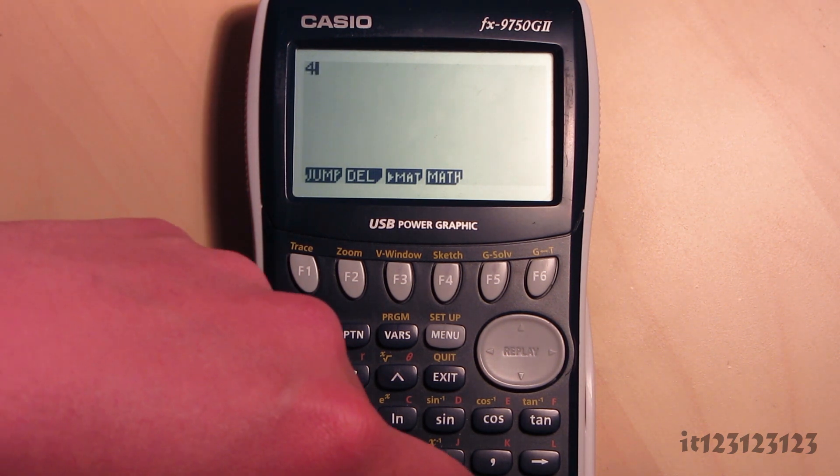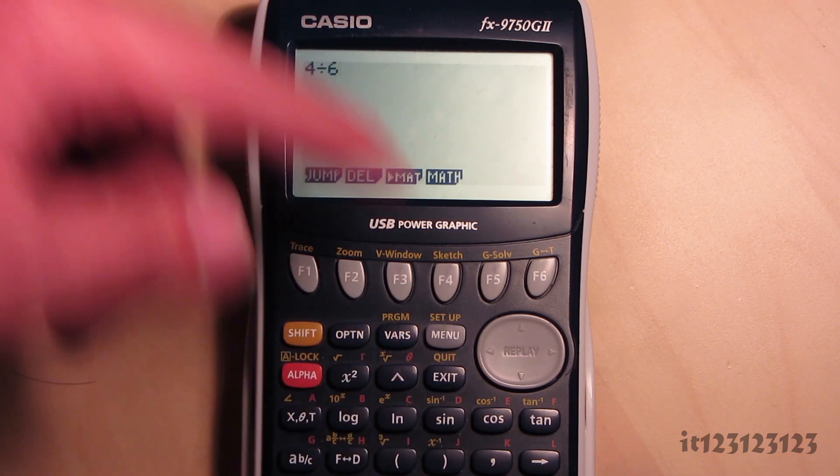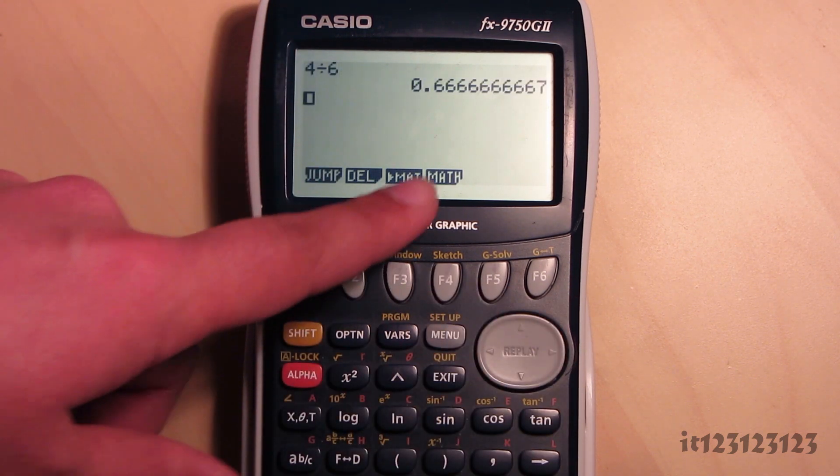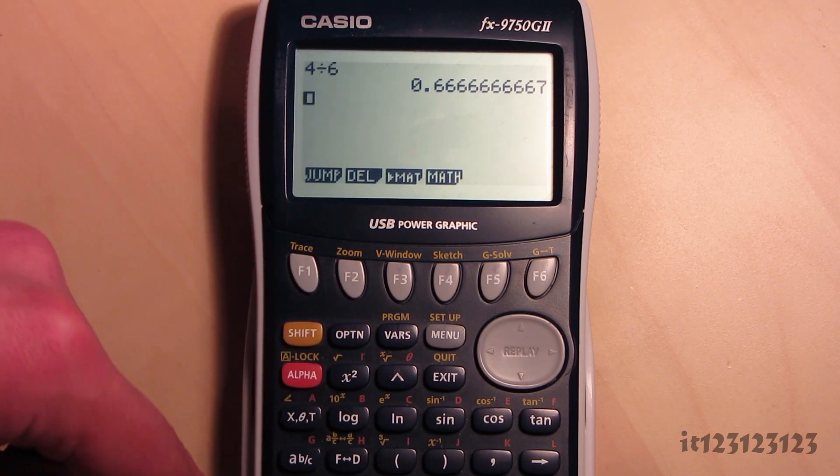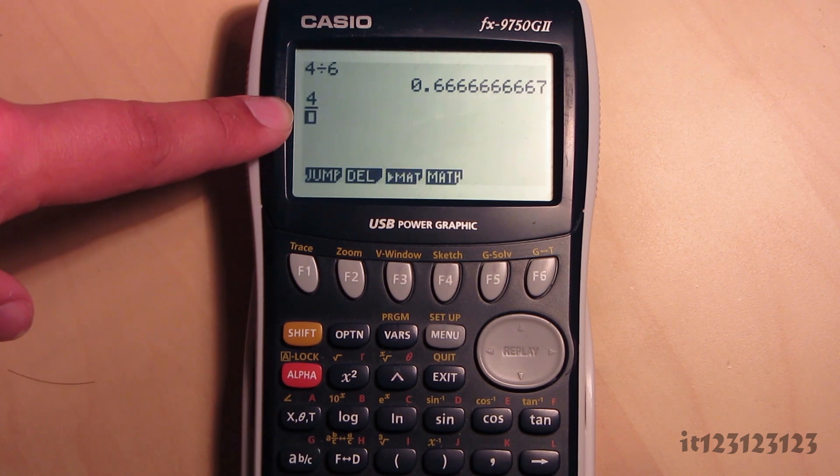Instead of previously, say for example you would have gone 4 divided by 6, you can now see that comes out like that. But if you want to put a fraction, press 4, press the fraction button here, and now you can see it comes up as a fraction.